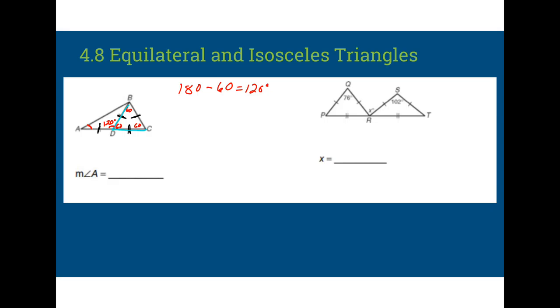And because this is an isosceles triangle, we know that this other angle right here is going to be congruent to that angle A that we're trying to find. So I can call it X, just like I've been doing. And I can set up my triangle sum theorem equation. 120 plus X plus X is equal to 180. And solve from there. Go ahead and pause the video. See if you can solve it on your own. Alright. So working through this problem, we get X equals 30. So that I know the measurement of angle A is 30 degrees.